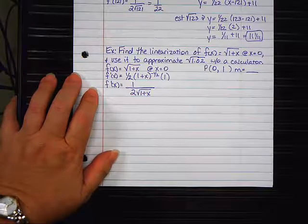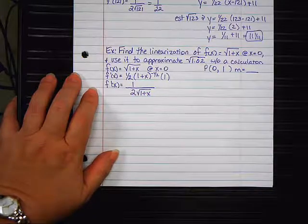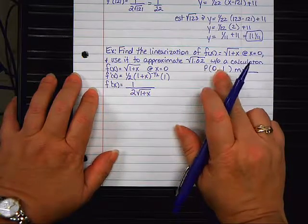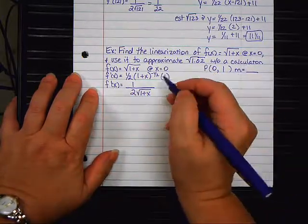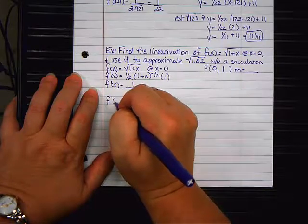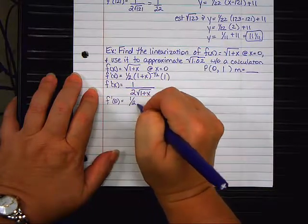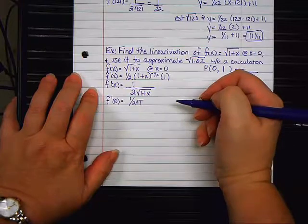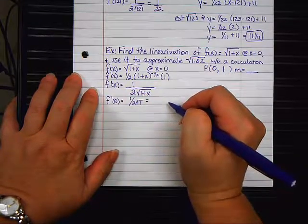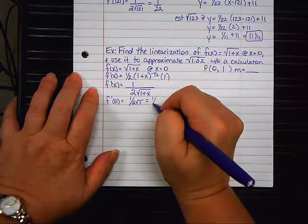Am I supposed to set this equal to 0? No. I'm supposed to plug in 0 because 0 is the x point in question. So f prime of 0 equals 1 over 2 square roots of 1, which cleans up to be 1 half.